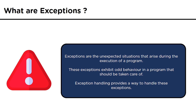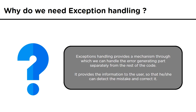Exception handling provides a way to take care of problems like these. We need exception handling in C++ to handle exceptions that arise during execution of the program. It also provides a mechanism to handle the error-generating part separately from the rest of the code, and provides information to the user about the problem so they can detect and correct the mistake.